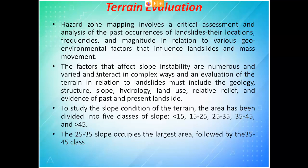The factors affecting slope stability that we consider are: geology, rock structure, slope angle, hydrology relating to water table, land use, relative relief, and field evidence. We begin our study by categorizing slope angle: less than 15 degrees, 15 to 25 degrees, 25 to 35 degrees, 35 to 45 degrees, and greater than 45 degrees. If the slope is greater than 45 degrees, it is more prone to landslide.